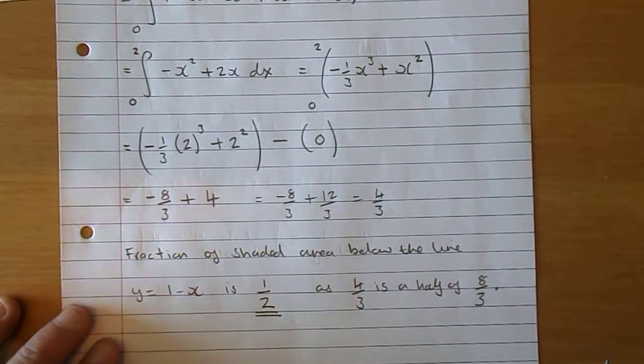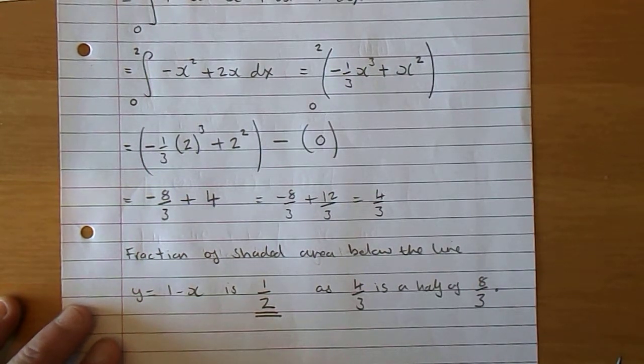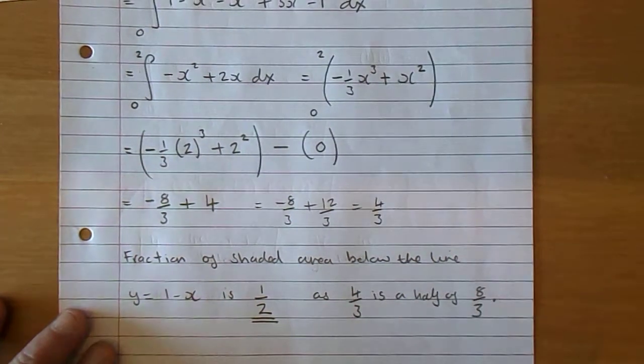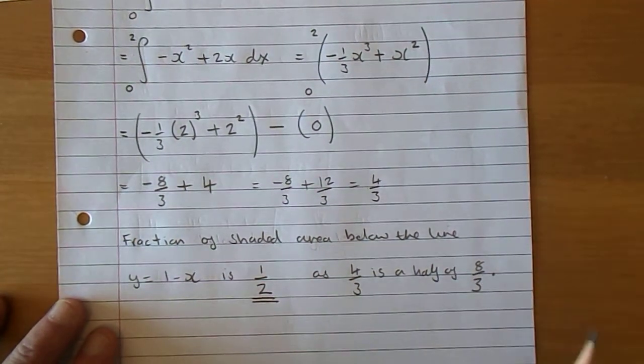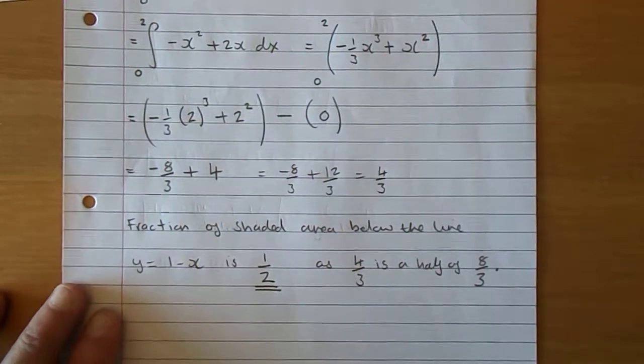Now, the area between the two curves we got before was 8 thirds. The area below the line y equals 1 take x is 4 thirds, so it's half of it. 4 thirds is half of 8 thirds, so half of the area lies below the line 1 take x.